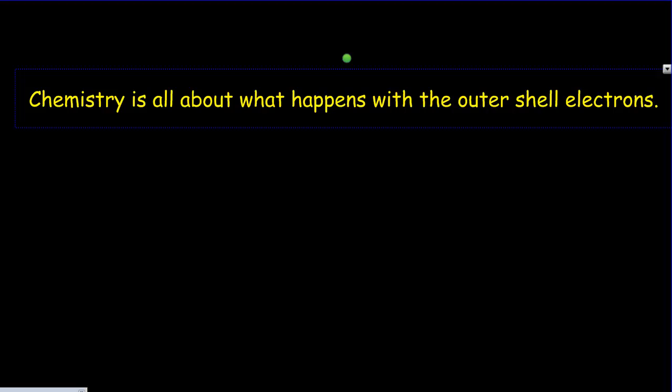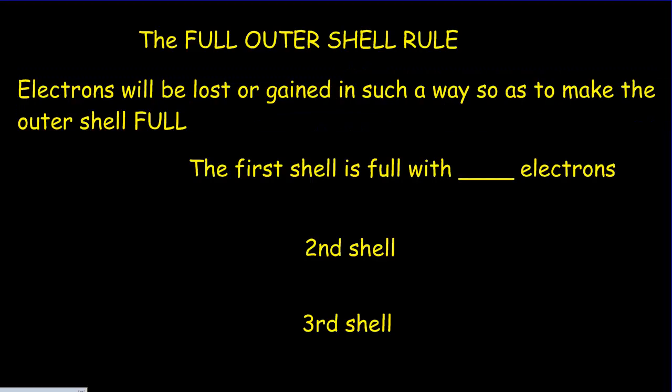We have a little rule called the full outer shell rule, sometimes called the octet rule, because some of the shells are full when they have eight electrons.